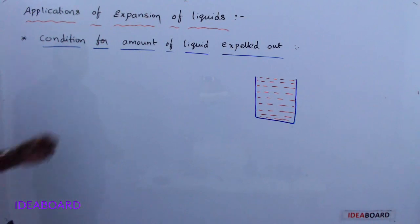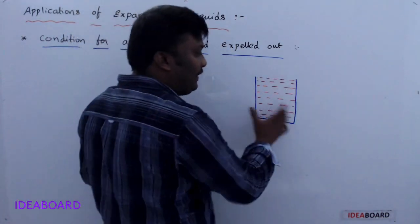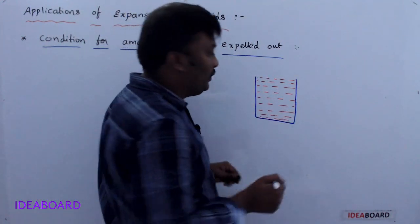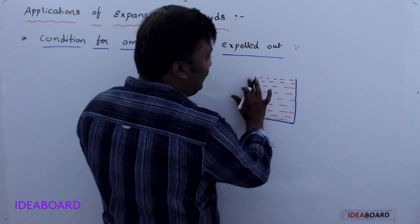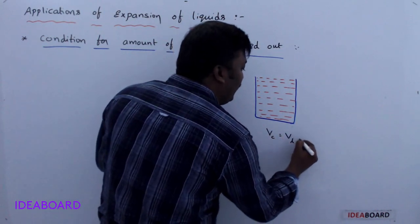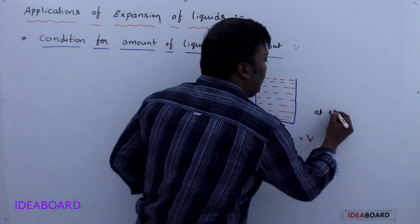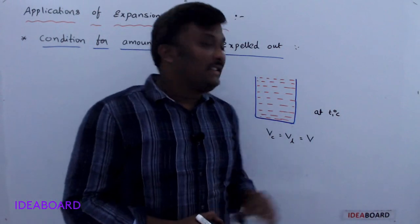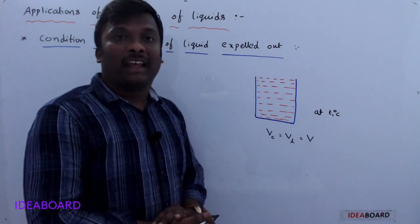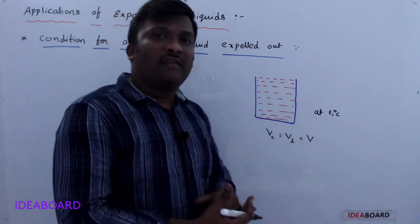The second application is the condition for the amount of liquid expelled out. Consider a vessel completely filled with liquid — so the volume of the container equals the volume of liquid, both equal to V — at an initial temperature T1 degrees Celsius. When heated, both the vessel and the liquid expand. The liquid will be expelled out only when the expansion of the liquid is more than the expansion of the container.